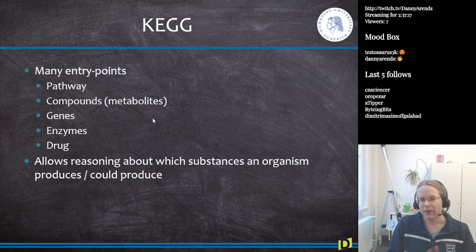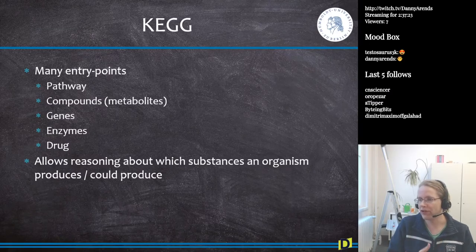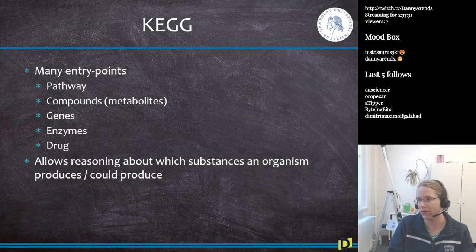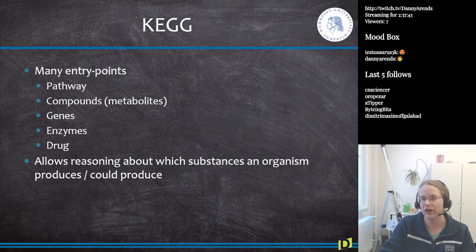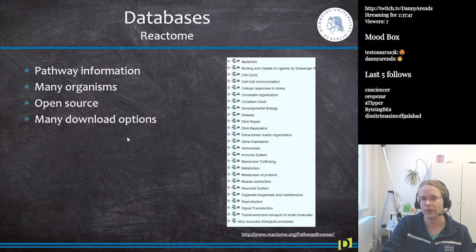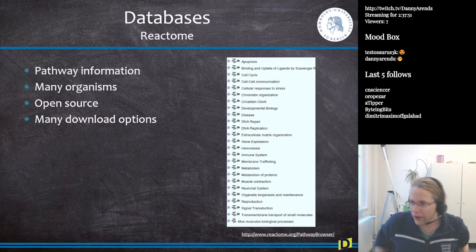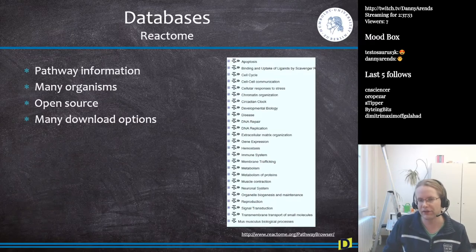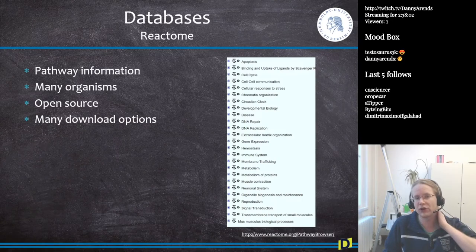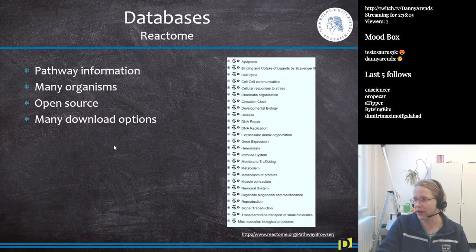KEGG is the main entry point for pathway information, compounds, and metabolites. It couples these to genes, provides an overview of enzymes, and also has a large drug section — for example, it can tell you if a certain animal is able to break down cocaine. It allows you to reason about which substances an organism produces or could produce given the right input metabolites. Besides KEGG, there is also Reactome, which is very similar to KEGG but also very different. It also contains pathway information and covers many different organisms, and is open source with many download options.